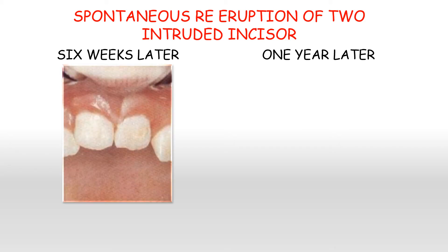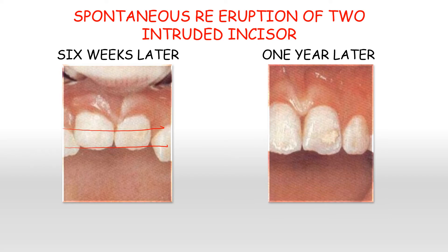Spontaneous re-eruption can occur over a period of several months. This is a picture after 6 weeks — observe the level of the incisal edge and compare it with the original level, so the teeth have started erupting. The picture after 1 year shows that the incisal edge level is very nice and as it should be, meaning the teeth have fully erupted.